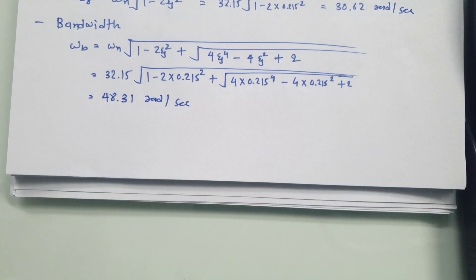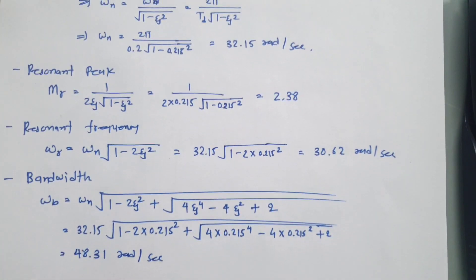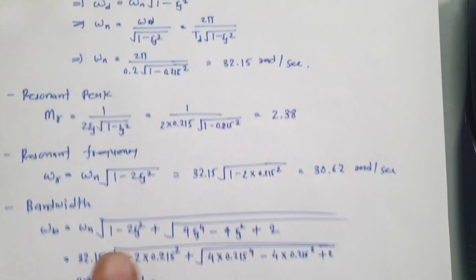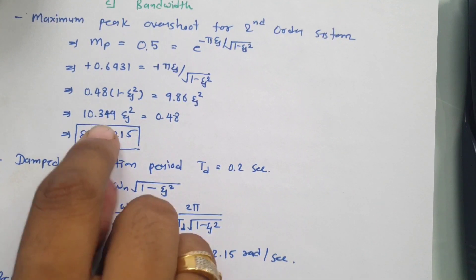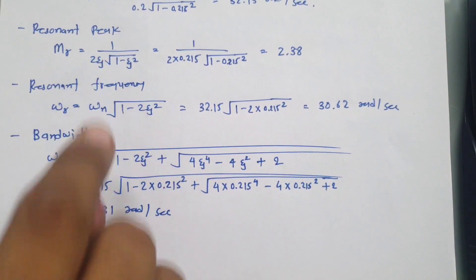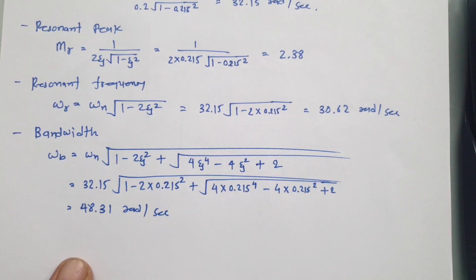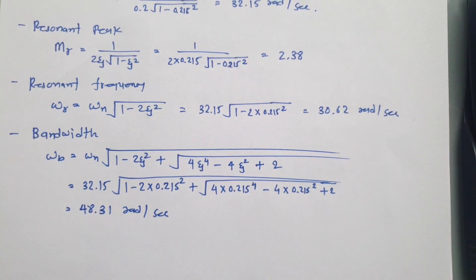This is how we solve this type of frequency response analysis problem. Whenever you have such a question, focus on finding ζ and ωn first. If they are not given, identify them from the given data, then apply the derived formulas. Thank you for watching — please share your valuable suggestions.